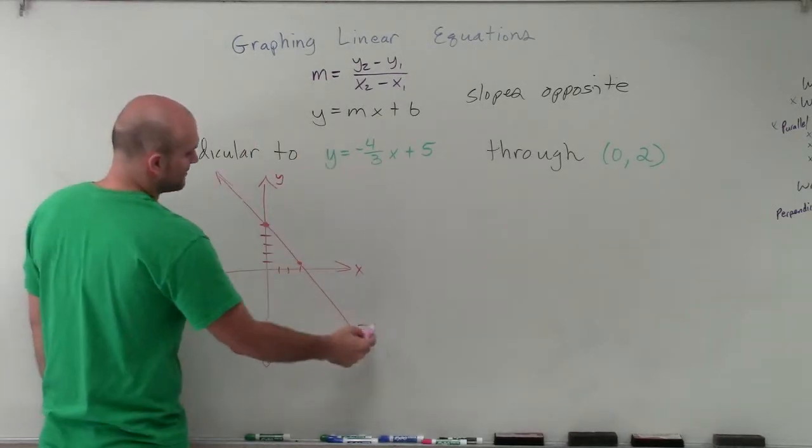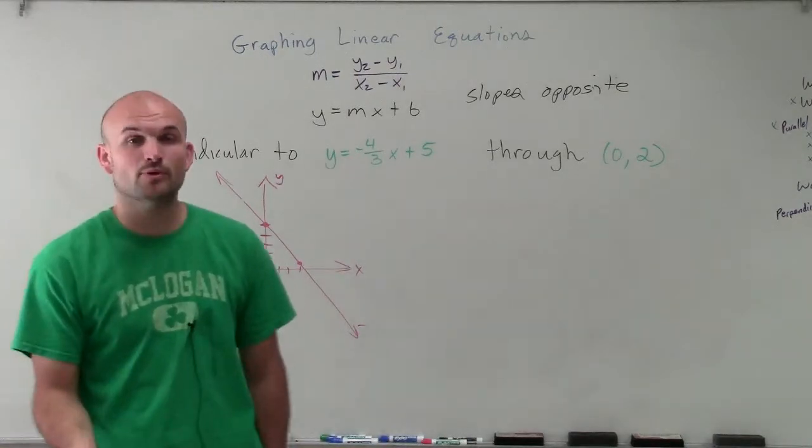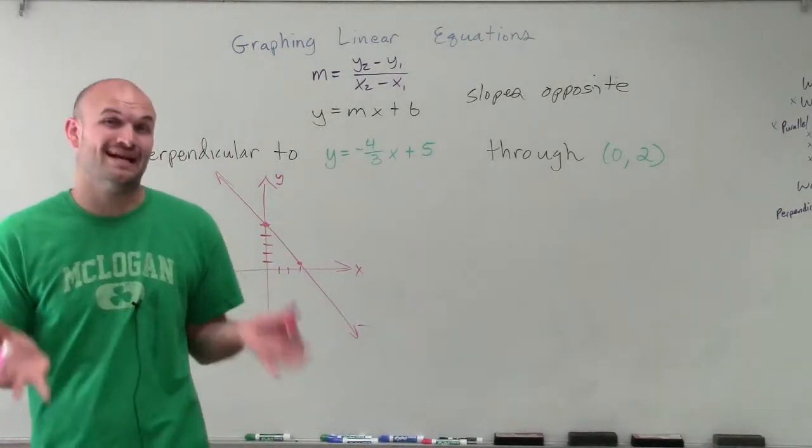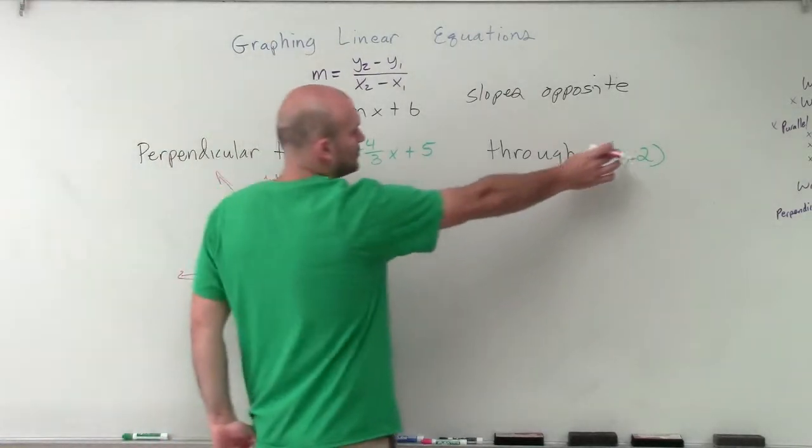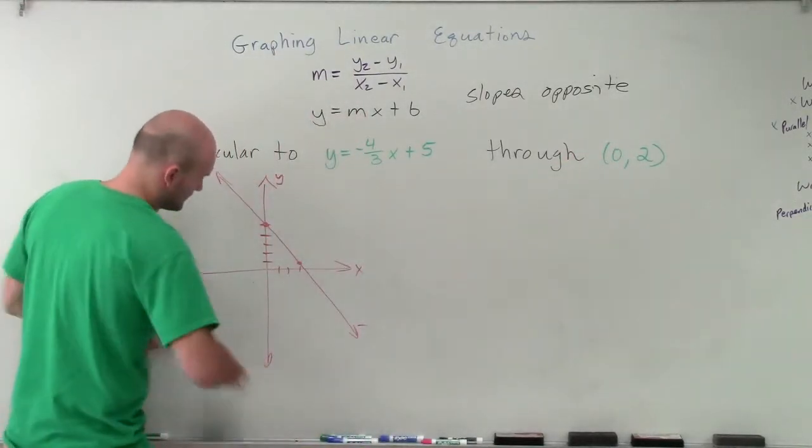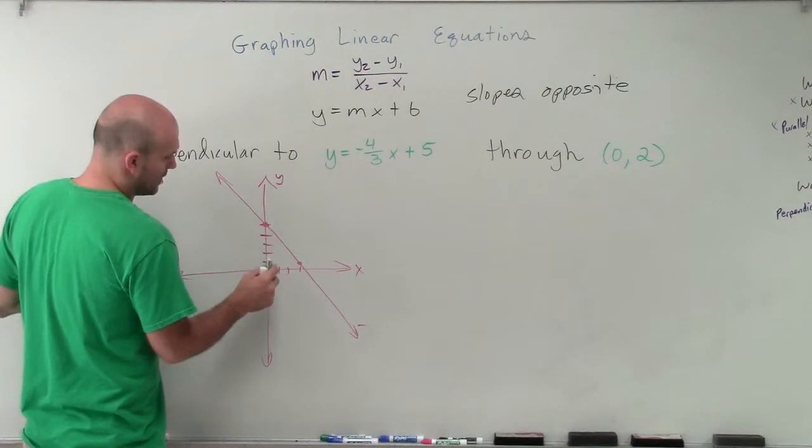And we can tell that this is going to have a negative slope. So when we're looking at perpendicular lines, we know our perpendicular line has to then have a positive slope. But it also has to go through the point 0 comma 2.